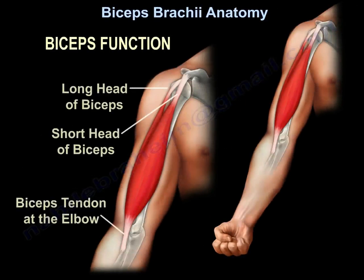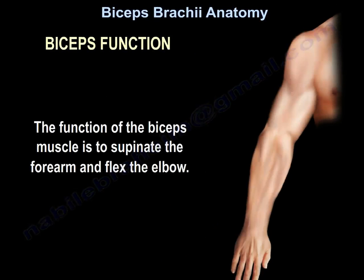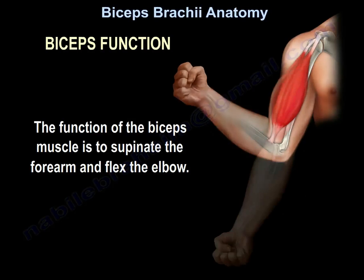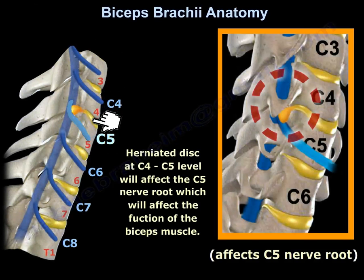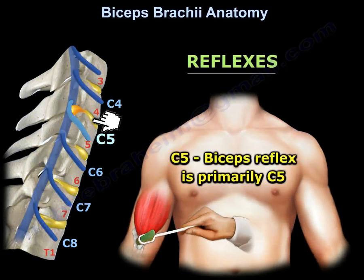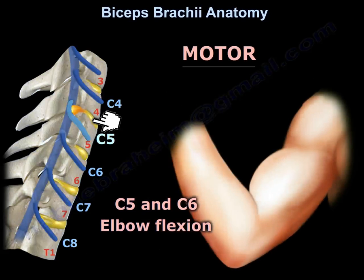Biceps function. The function of the biceps muscle is to supinate the forearm and flex the elbow. A herniated disc at the C4-C5 level will affect the C5 nerve root, which will affect the function of the biceps muscle. This is the sensory area of C5 nerve root involvement. The biceps reflex is primarily C5, and elbow flexion is a function of both the C5 and C6 nerve roots.